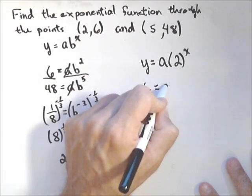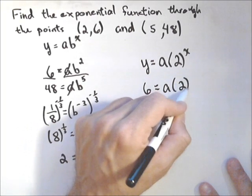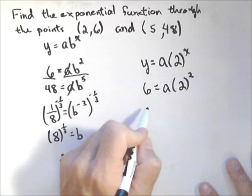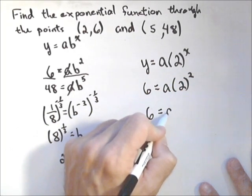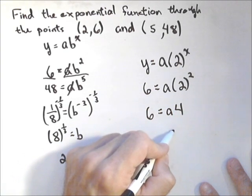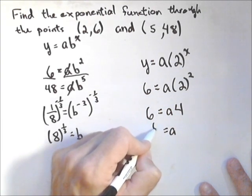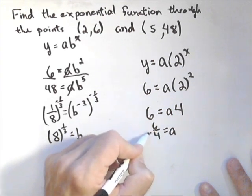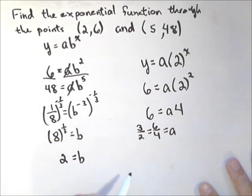So, I'm going to use this point. So, I plug 6 in for y. Equals a times 2 squared. So, I got 6 equals a times 4. Divide both sides by 4, I get a equals 6 over 4, or 3 halves.